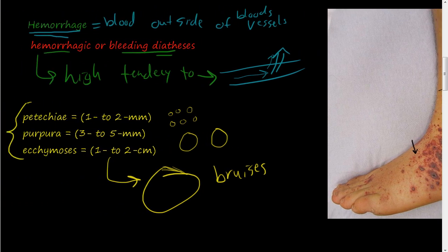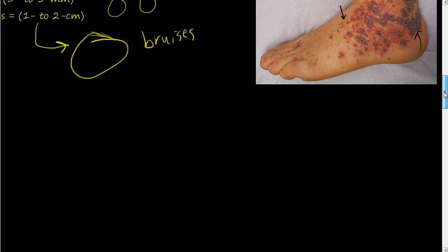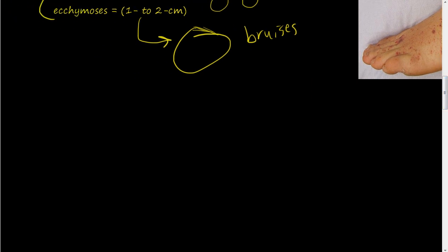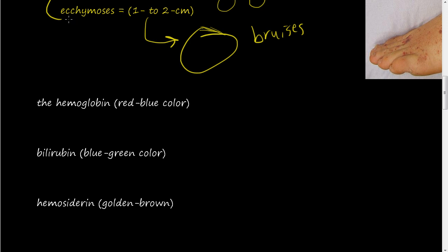So that is hemorrhaging and petechiae, purpura and ecchymosis. So now let's talk about ecchymosis a little bit more. Ecchymosis. So when someone gets an ecchymosis or a bruise, a big one to two centimeter bruise appears. And that is due to the hemoglobin inside your red blood cells.